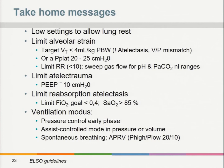In summary, the ventilator during ECMO should be set to allow lung rest. Limit alveolar strain by limiting tidal volumes using pressure control ventilation with tight plateau pressure limitation. Limit respiratory rate using sweep gas flow. Provide lung recruitment with a PEEP level of 10 cmH₂O. Limit FiO₂ — a saturation of 85% is sufficient. Regarding ventilation mode, allow the patient to breathe spontaneously as soon as possible, as this will have a positive effect on the diaphragm.